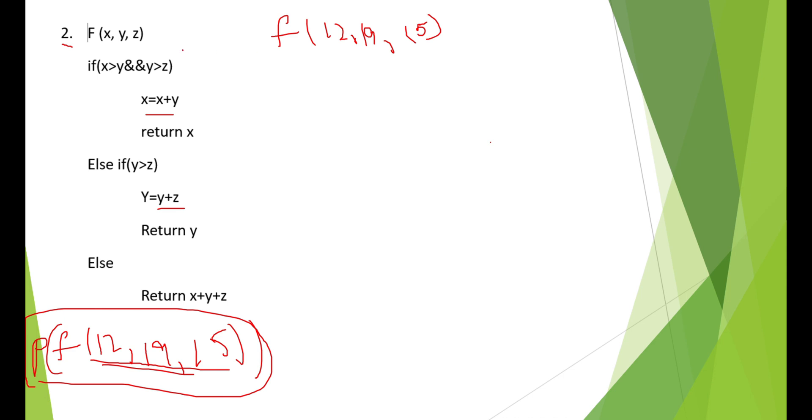If you look at this function, it takes 3 parameters. That is, x will be 12, y will be 19, z will be 15. You just need to carry out these conditions. Whichever is true, it will execute that. And that just exit out of the loop. That's it. Exit out of the function.